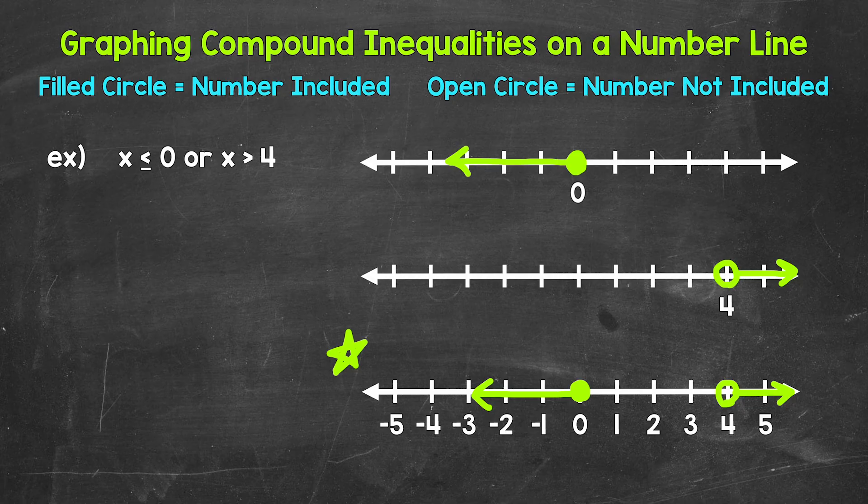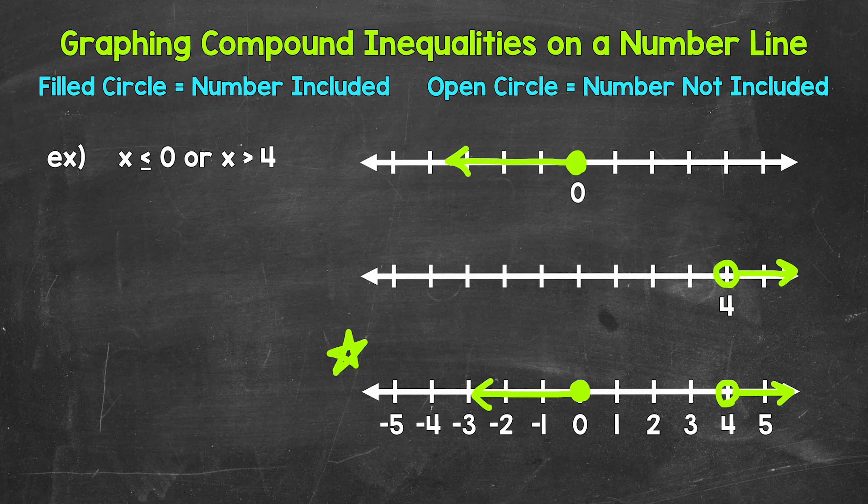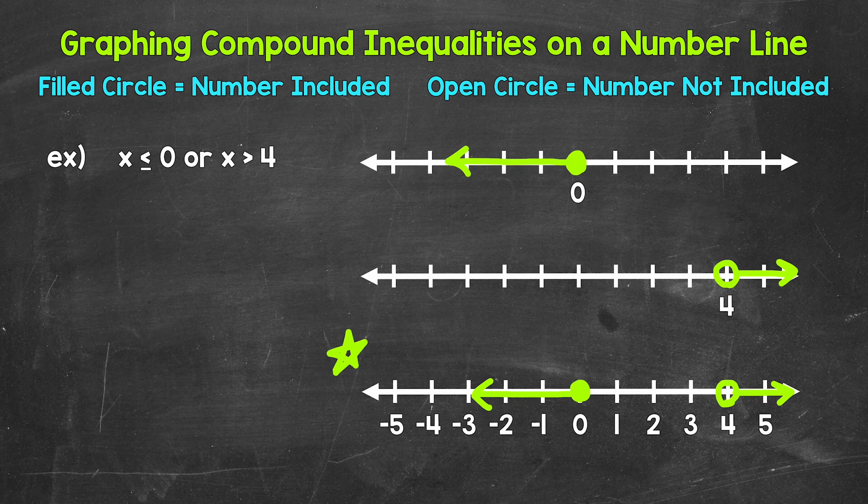Anything less than or equal to 0 will work. Or anything greater than 4 will work. And we can see that represented on the number line. So there you have it. There's how to graph compound inequalities involving or on a number line.